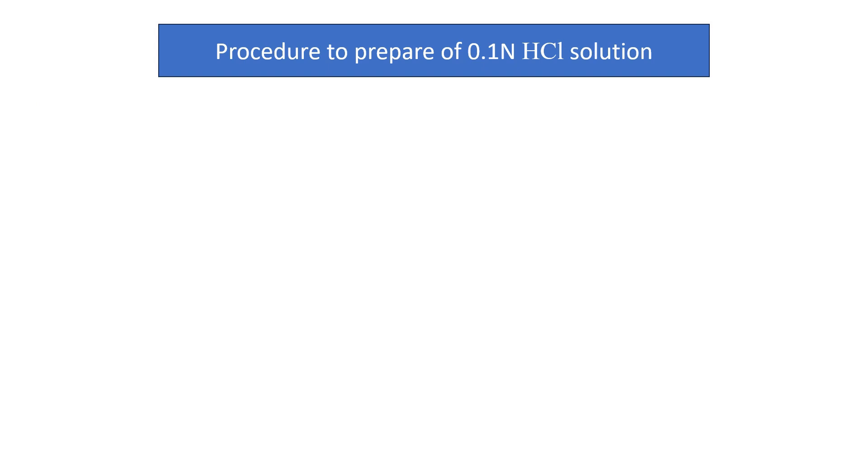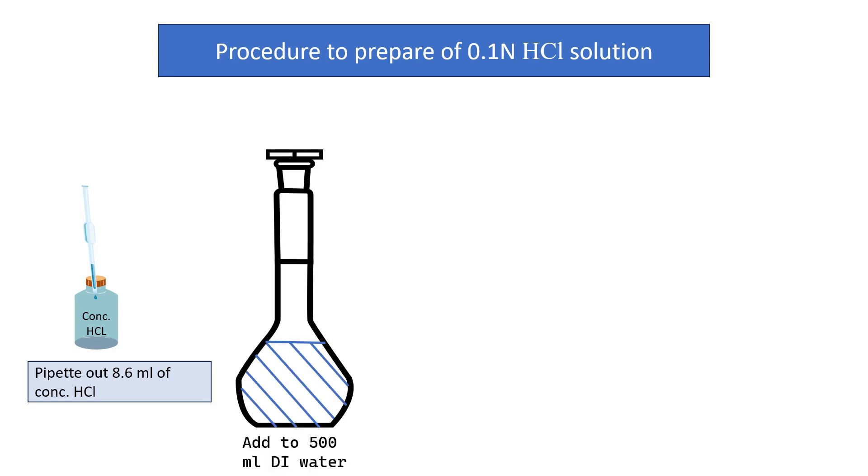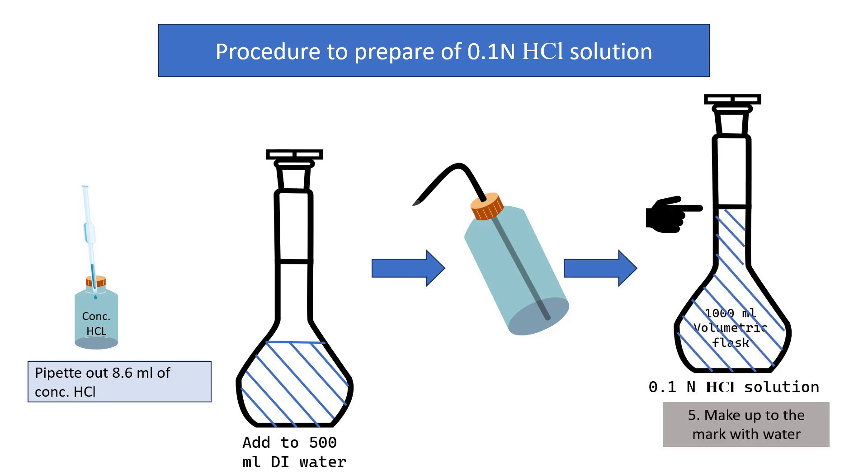Now let's see the procedure schematically. Carefully measure 8.6 ml of concentrated HCl using a pipette. Always add acid to water, not water to acid, to avoid splashing. Slowly add the HCl to around 500 ml of distilled water in a 1 litre volumetric flask. After mixing well, top it up with distilled water to reach exactly 1 litre. This is your 0.1 normal HCl solution.